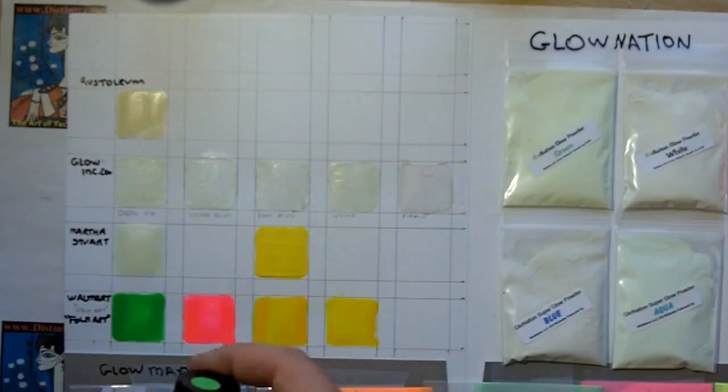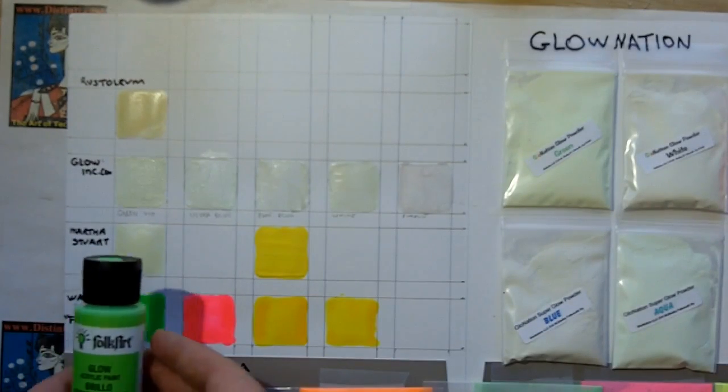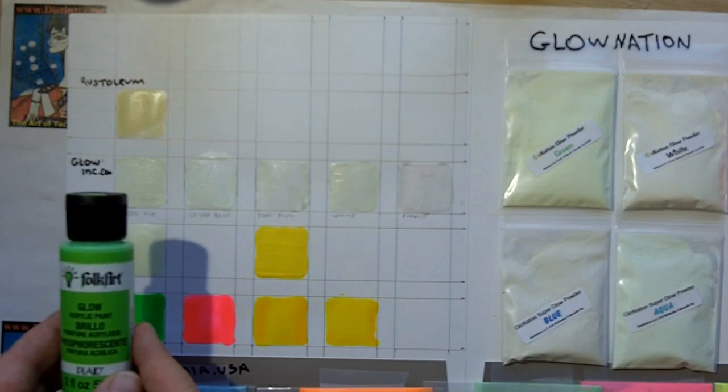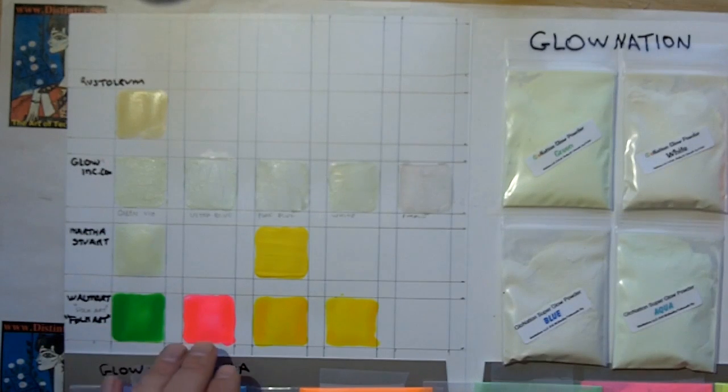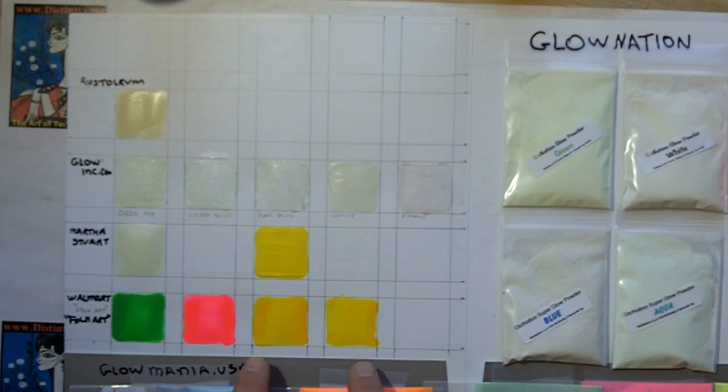The paints from Walmart look actually better and brighter in the bottle. This is their Walmart Folk Art series of paints. They've got green, magenta, and yellow. These two yellows are the same. I just put a thicker coat on this one to see if I can get more glow out of it.